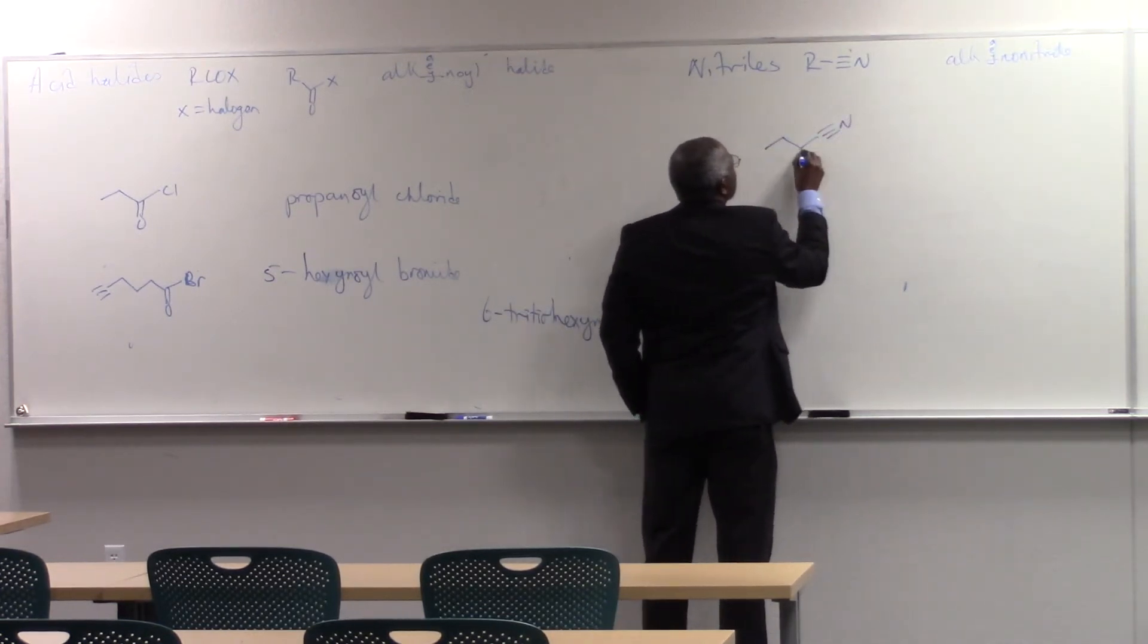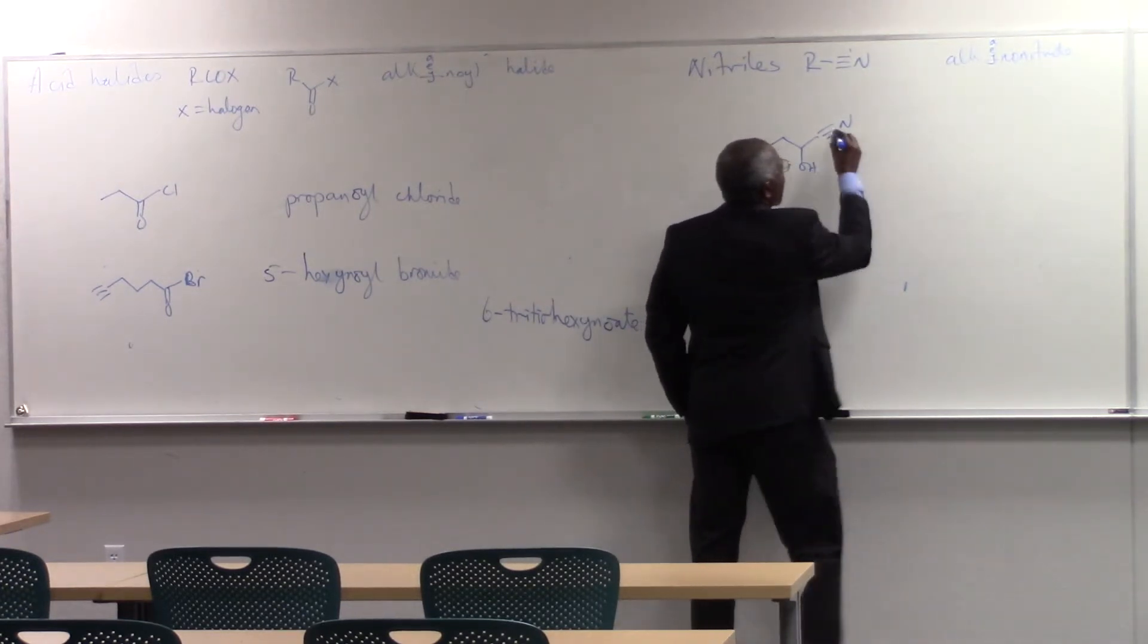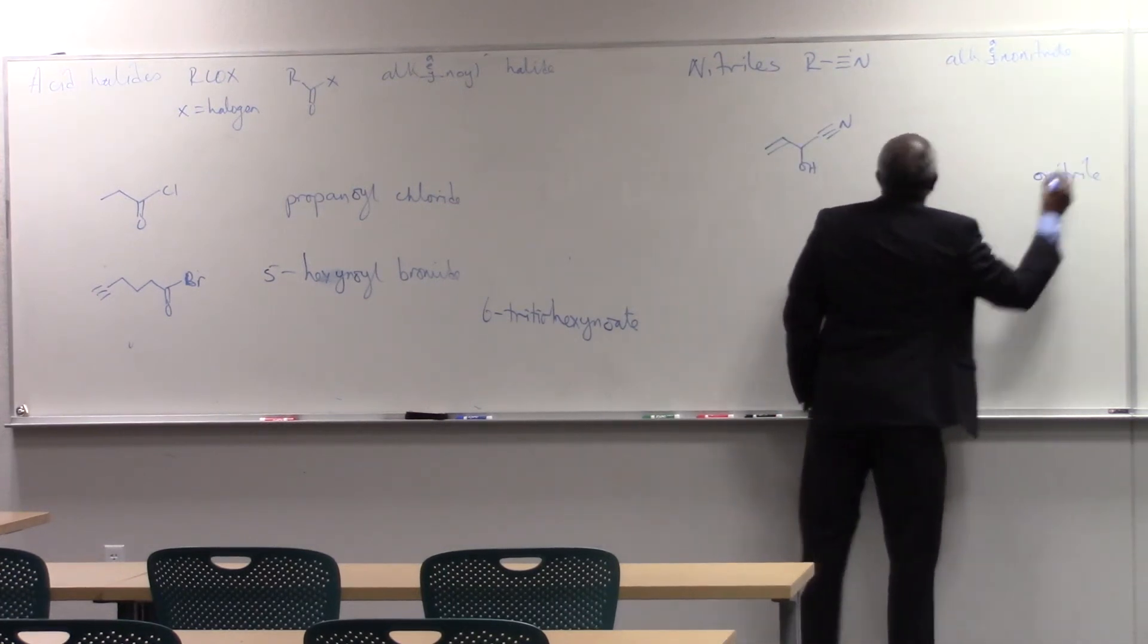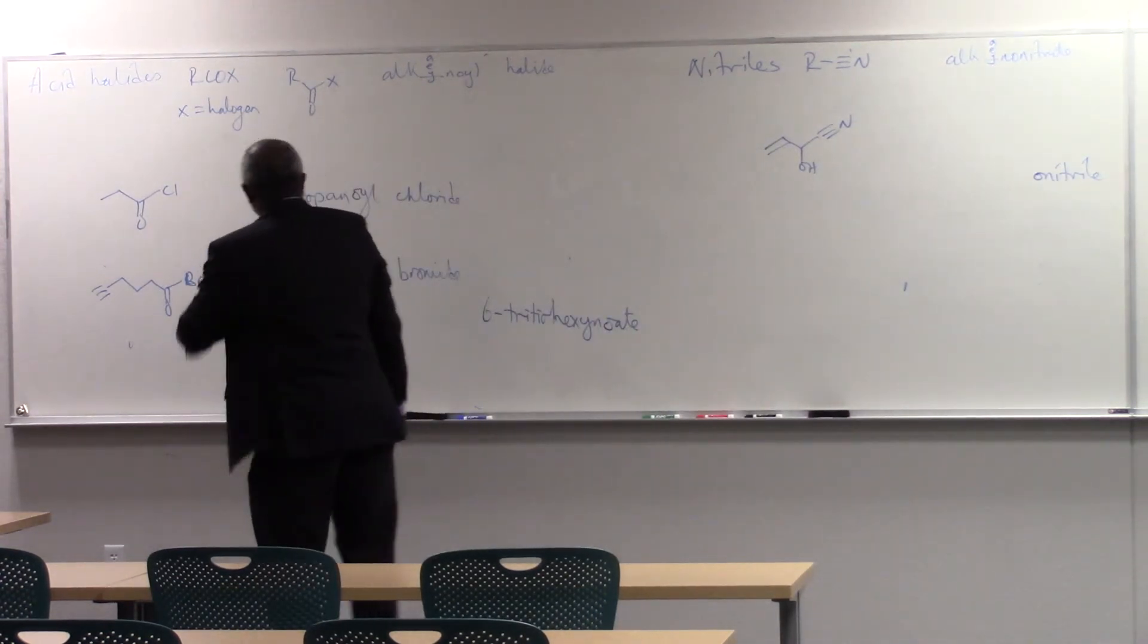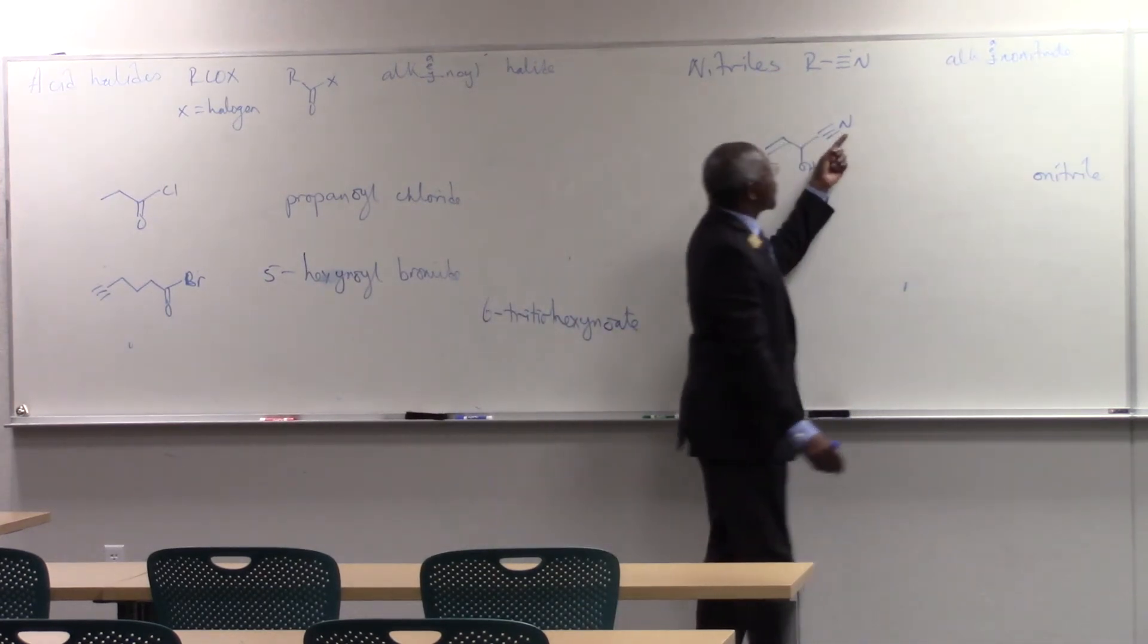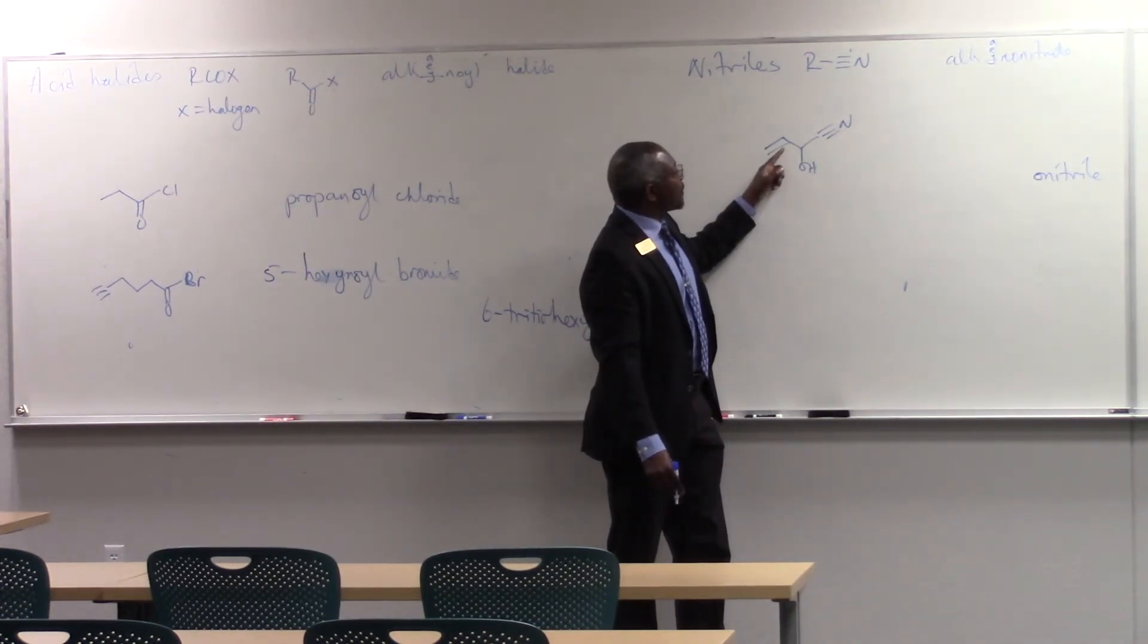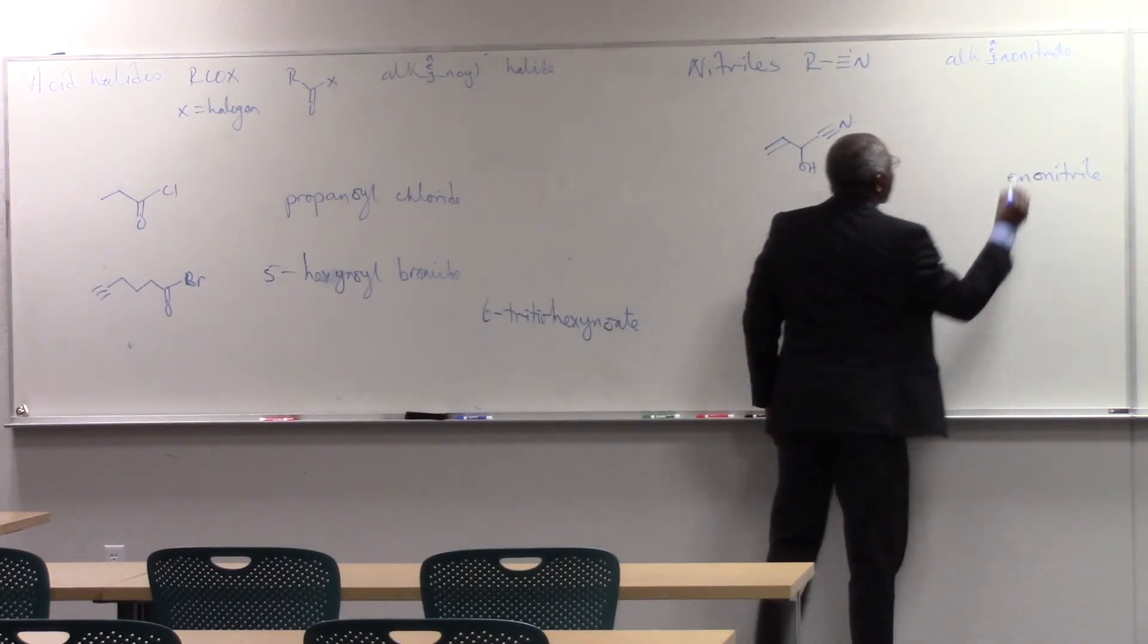So this is an enonitrile. Carbon, carbon, double bond. Now this triple bond is not C-triple bond C, right? So it's not an ino, that's part of the nitrile function. I've got a carbon-carbon double bond in the backbone, so it's an enonitrile.